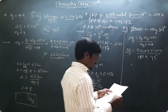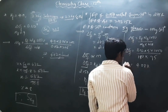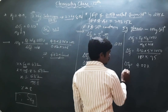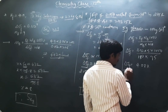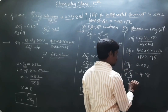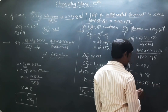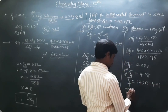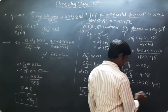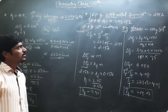The final answer is ΔTf = 4.08 K. Since ΔTf = T₀f − Tf, we get Tf = 273.15 − 4.08 = 269.07 K. This is the freezing point of the glucose solution.